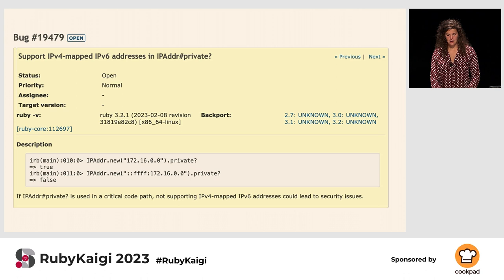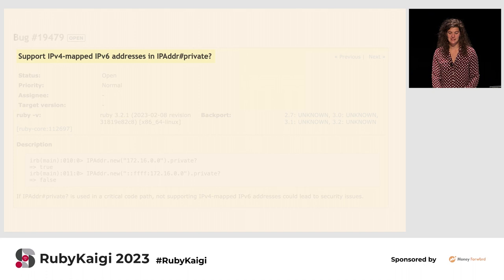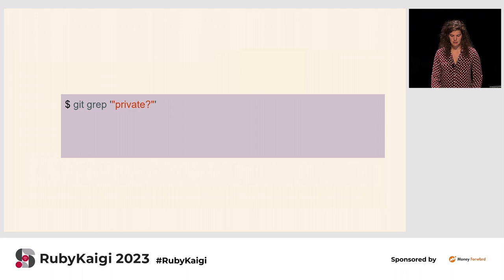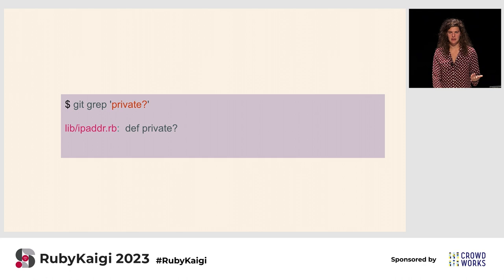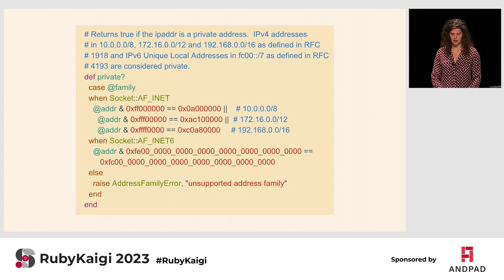There's one more bug: "Support IPv4-mapped IPv6 addresses in IPAddr#private." It has to do with IPAddr and specifically the method `private`. If we use our technique from earlier — searching for the method name in quotes — we see nothing related to IPAddr. Searching for `private` without quotes returns a Ruby file with what's clearly a Ruby method definition. That's what we'd want to change to fix this bug.